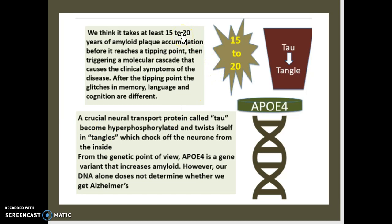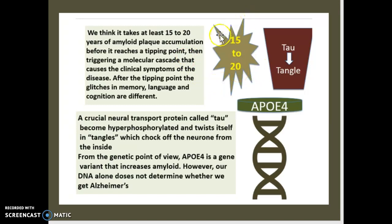We basically think it takes at least 15 to 20 years of amyloid plaque accumulation before there is actually going to be an effect or a tipping point. This triggers a chemical cascade that causes clinical symptoms of the disease — so basically after 15 to 20 years, the patient is actually going to start to feel the effects of Alzheimer's.